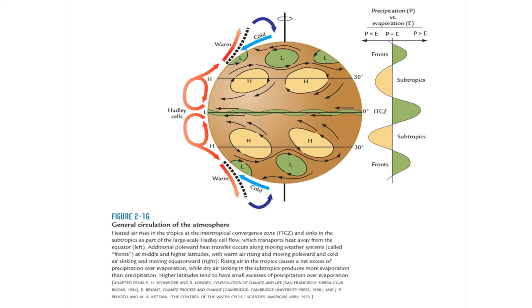As air tries to come into the region where air is rising, it is deflected by the Coriolis effect — coming from north to south in the northern hemisphere it is deflected to the right, and from the southern hemisphere to the left. This produces the so-called northeasterly and southeasterly winds, called trade winds for historic reasons — they were used by traders for sailing.